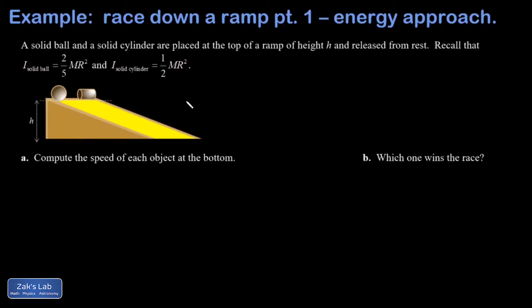This is a classic physics problem where I have two different shapes rolling without slipping down a ramp and I'm trying to figure out which one wins the race. It depends on how much moment of inertia they have.